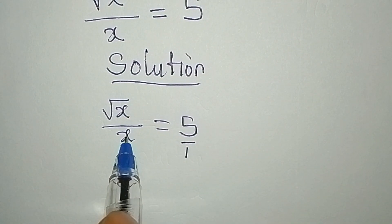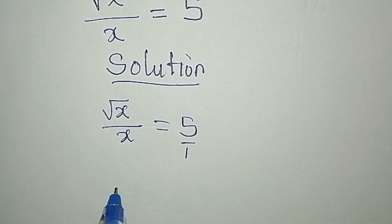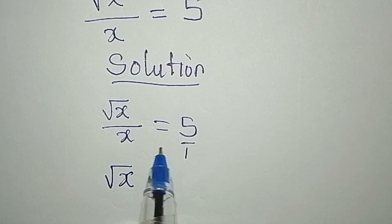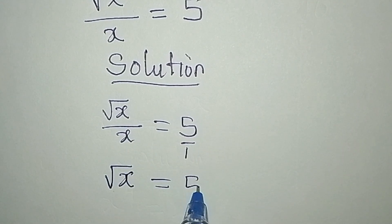Root x times 1 will give us the same root x, and this is equal to x times 5, which is 5x.